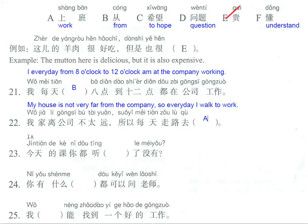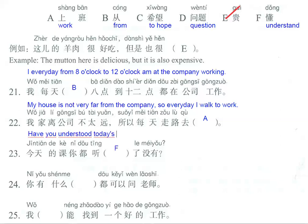Number 23: 今天的课你都听懂了吗 — have you understood today's lesson? The translation is: have you understood today's lesson? The answer is letter F.